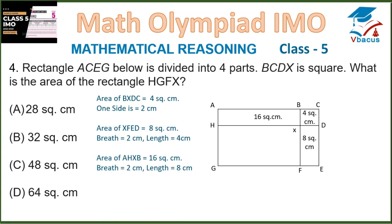Area of A, H, X, B is 16 square centimeters, breadth is 2 centimeters. If you divide 16 by 2, the length will become 8 centimeters. So the area of H, G, F, X will become 8 centimeters by 4 centimeters, which is 32 square centimeters. So option B is the correct option.